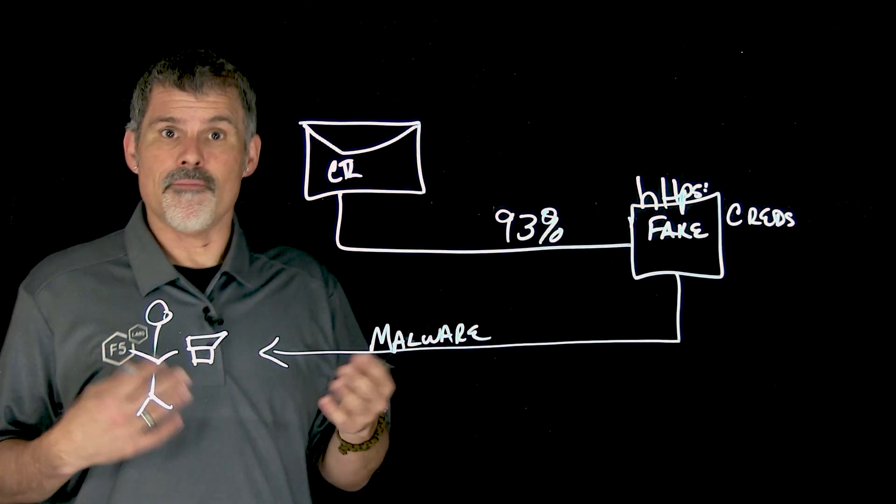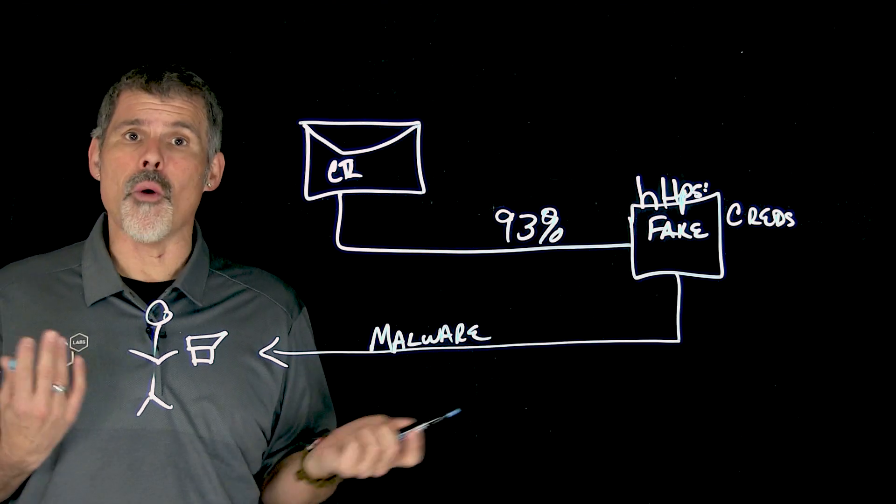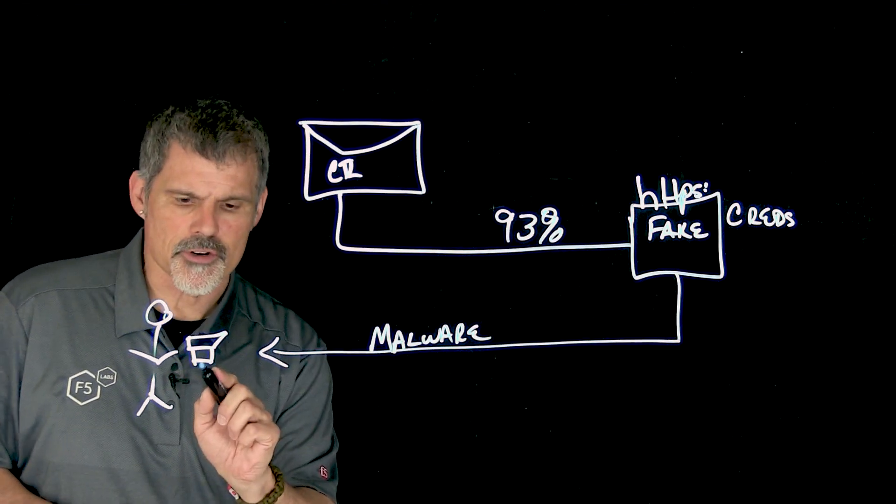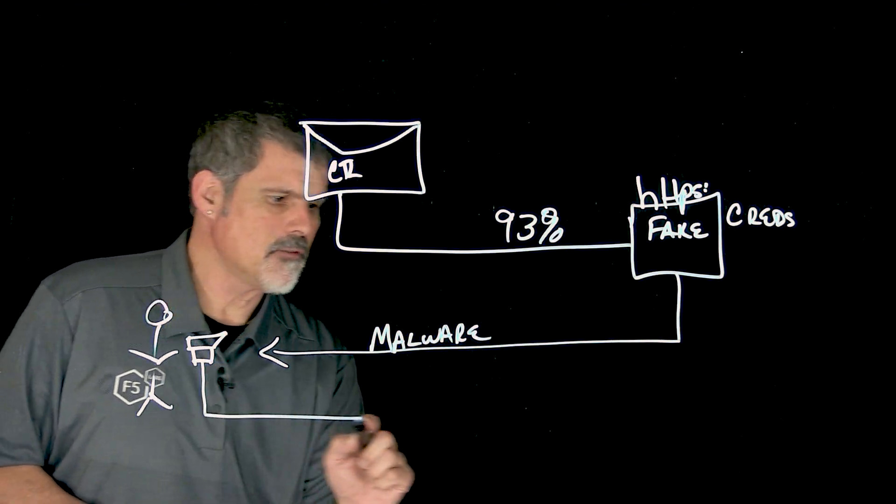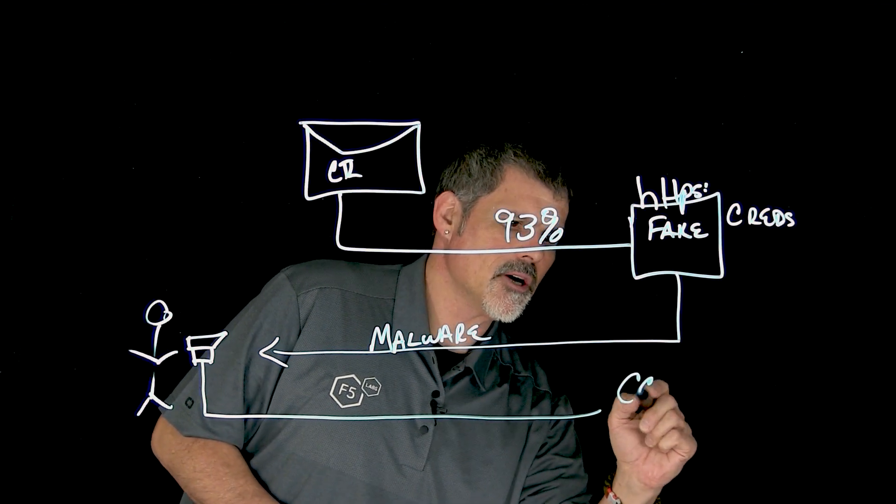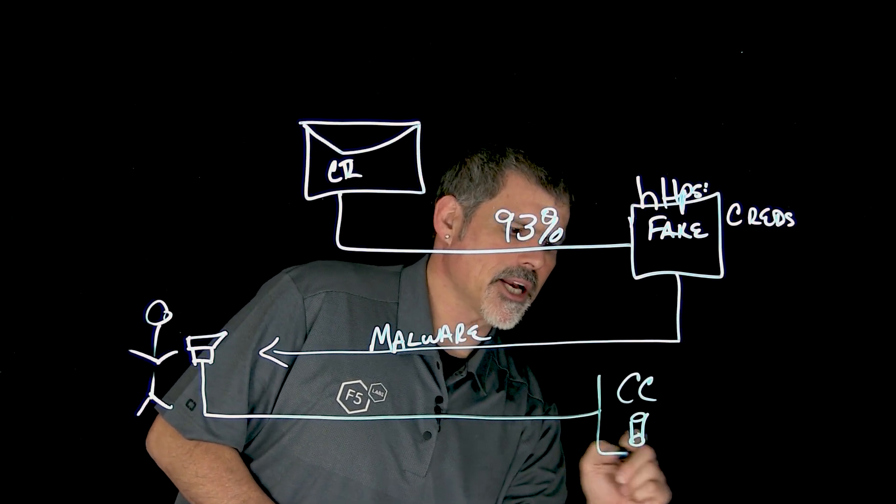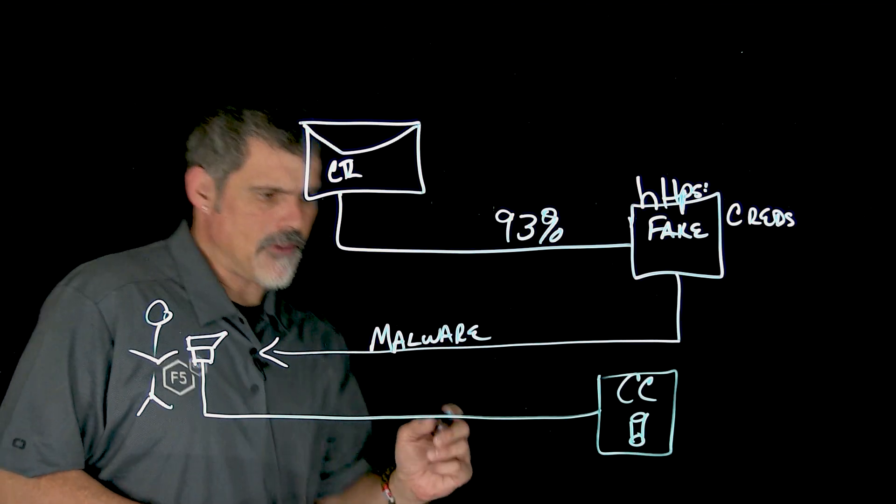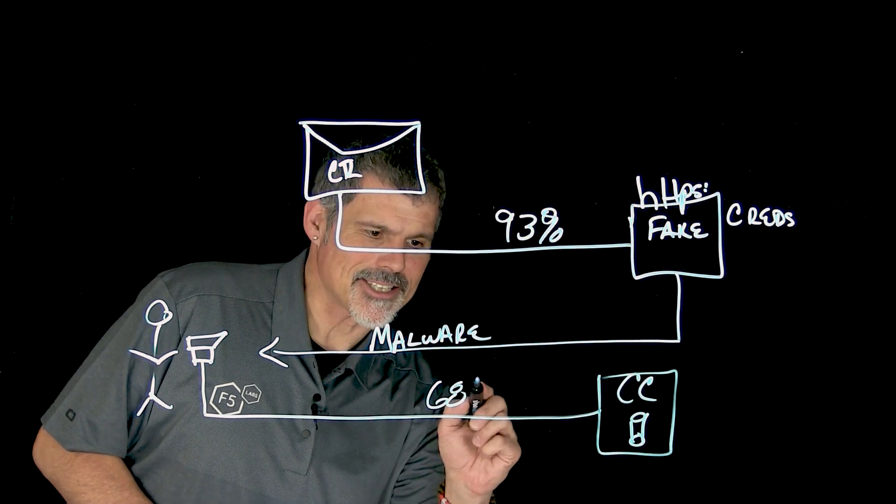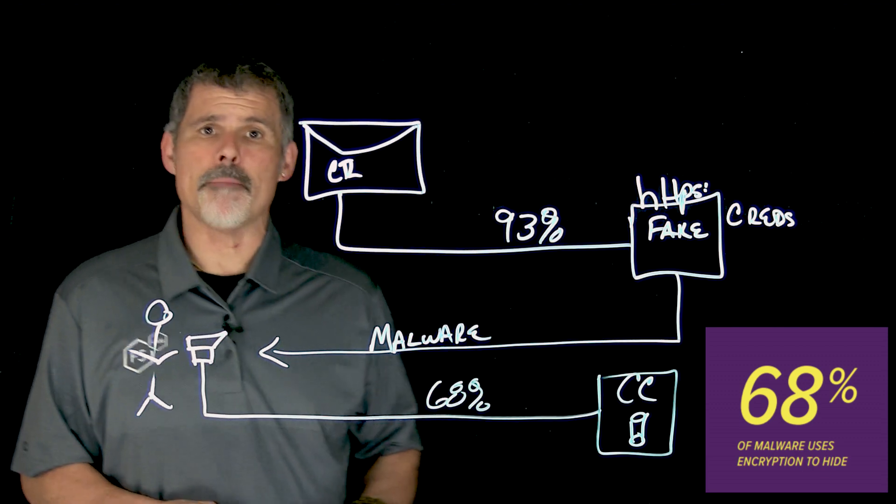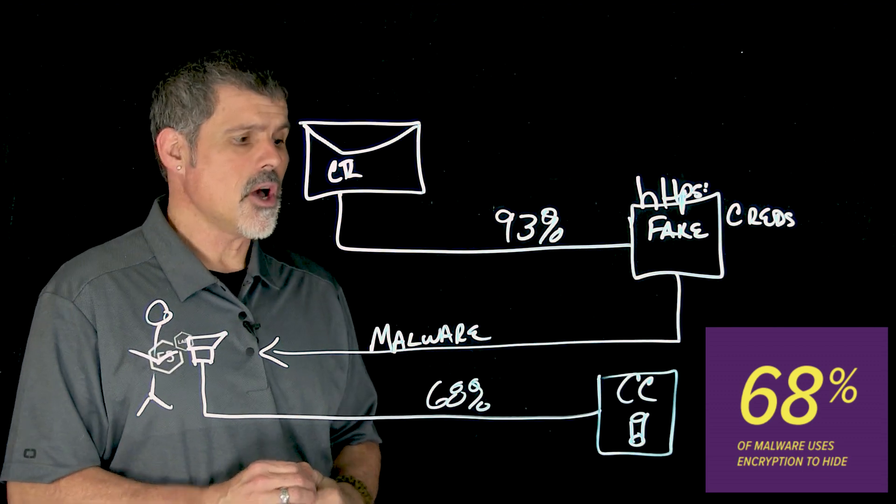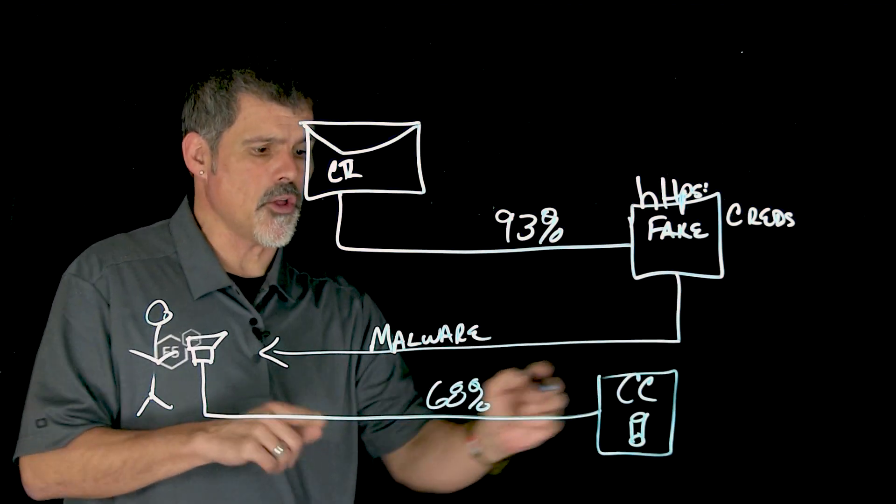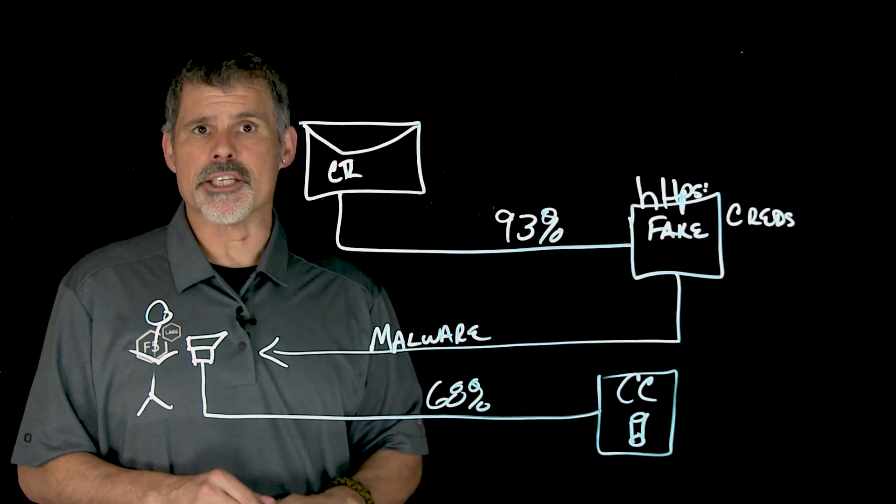And at some point, this encrypted file will then go out and hit the command and control server. So when it gets called from its botnet friends over to the command and control server, F5 Labs found that 68% of the command and control servers also have certificates. And so this connection is encrypted.